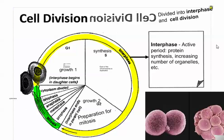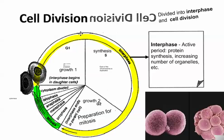In interphase, it is actually very active. Later on we'll learn about transcription and translation — protein synthesis — and a lot of proteins are being made during interphase: enzymes, hormones, antibodies, all those things. We're also increasing the number of organelles like mitochondria and chloroplasts if you're a plant cell, so those are being duplicated here as well.